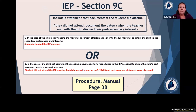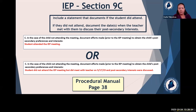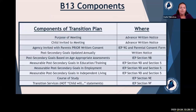Section 9C of the IEP is where you indicate whether the child attended the meeting, or if they didn't attend, document the efforts made to get their input around their post-secondary interests — document that you had a conversation with them about their post-secondary plan and the date you did that.